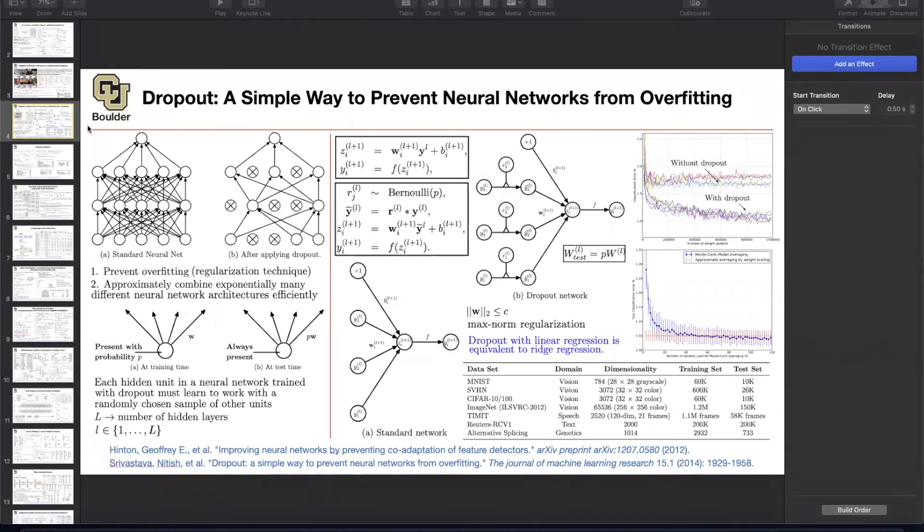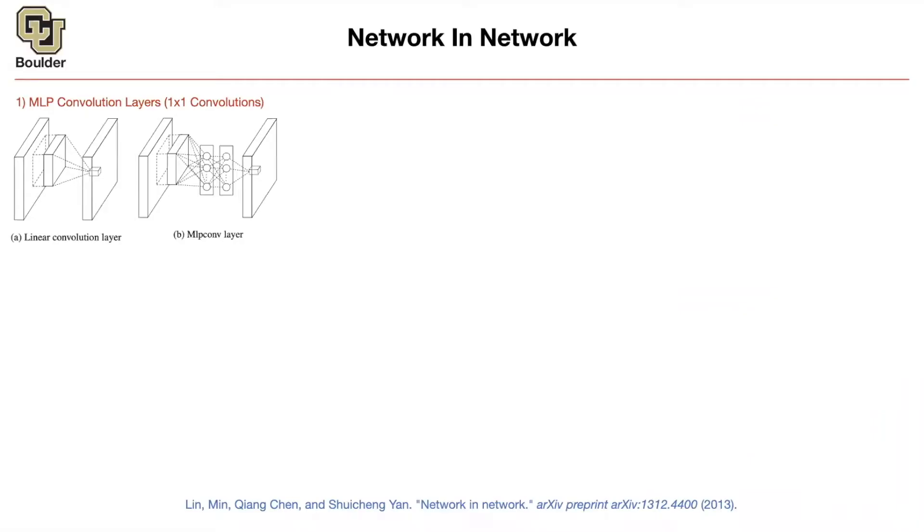So last session we talked about dropout and then we moved on to Network in Network. This was the first work that started to introduce and use 1x1 convolutions, and now they're really popular and many people after that paper are using 1x1 convolution in their works.